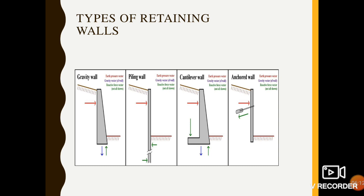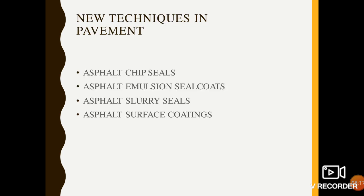Next we will move towards new techniques in pavements which are used nowadays. The first is asphalt chip seals, the second is asphalt emulsion seal coats, the third is asphalt slurry seals, and the last is asphalt surface coating.